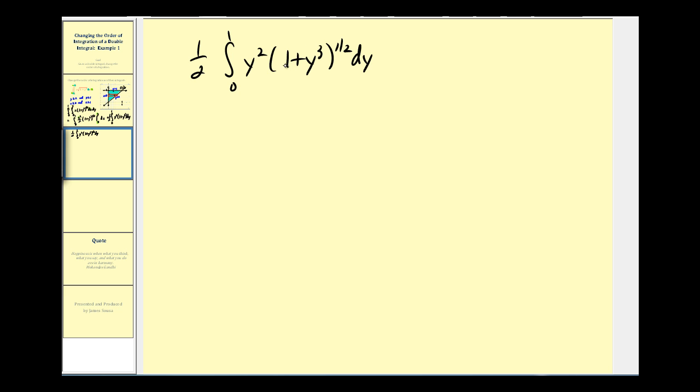Looks like we'll perform u substitution here. So here, this will be our u. So differential u would be 3y² dy. Looking at our integral, we do have a y² dy. So let's go ahead and divide this by three. So y² dy is the same as one-third du. So in terms of u, we'd have one-half times one-third. There's our du, and this just becomes u to the one-half.